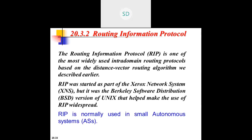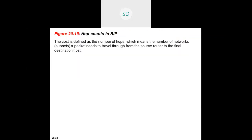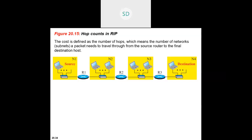Routing Information Protocol (RIP) is one of the most widely used intra-domain routing protocols, based on the distance vector routing algorithm. The routing table is updated based on the Bellman-Ford algorithm. It was initially started as part of Xerox Network Systems (XNS), but the Berkeley Software Distribution version of Unix made use of RIP. It is normally used in small autonomous systems.